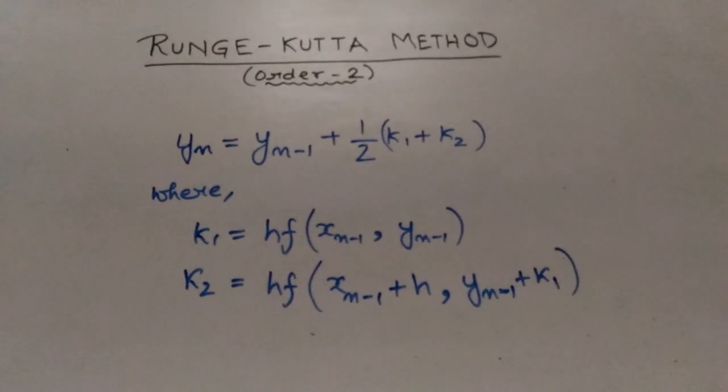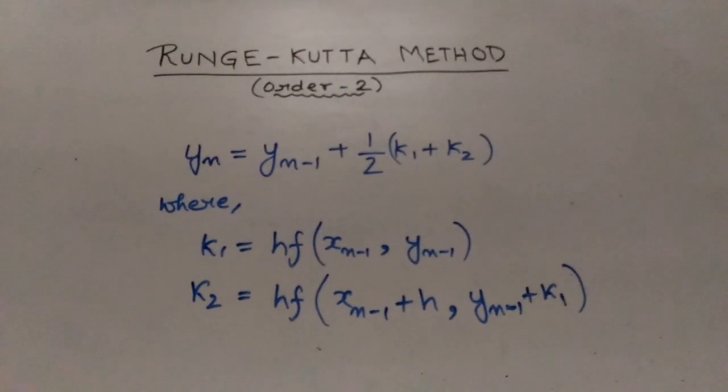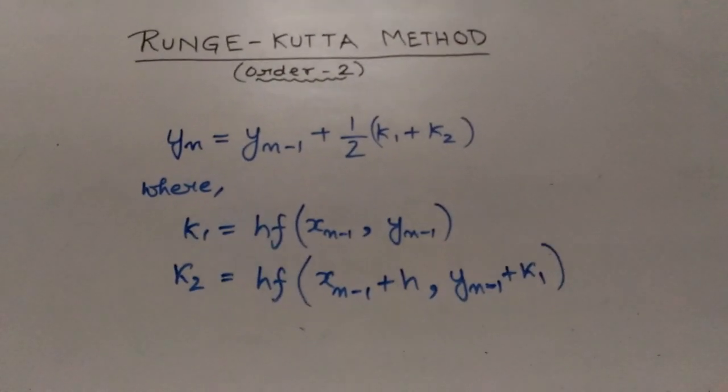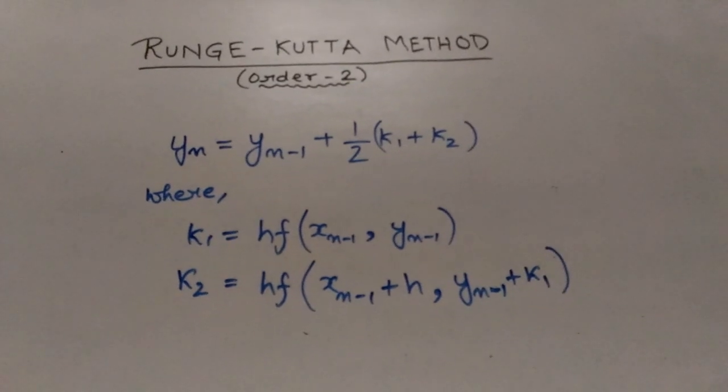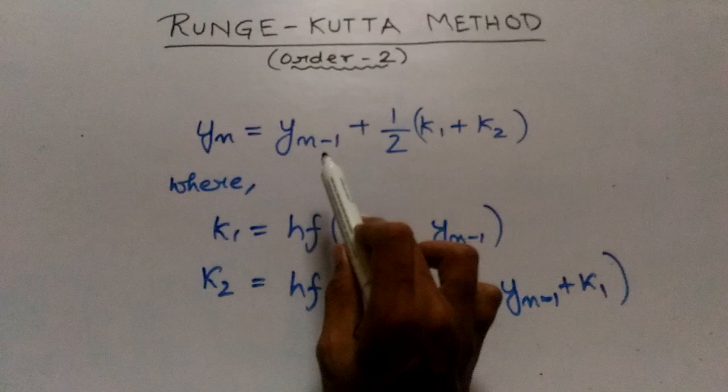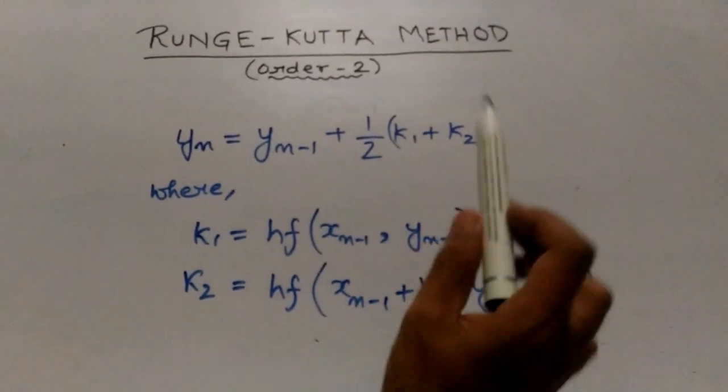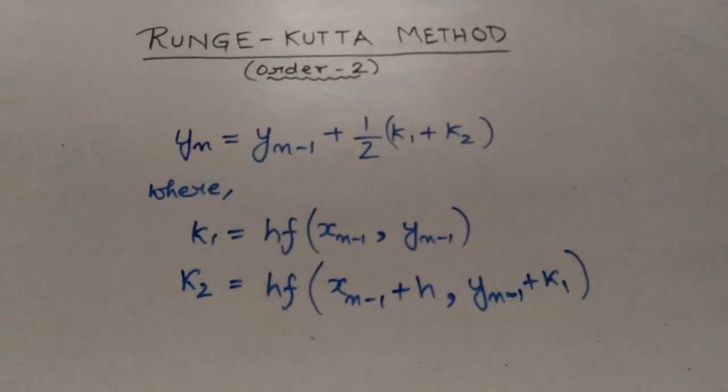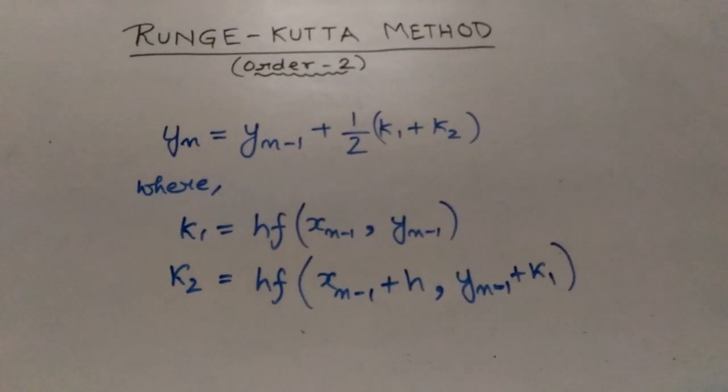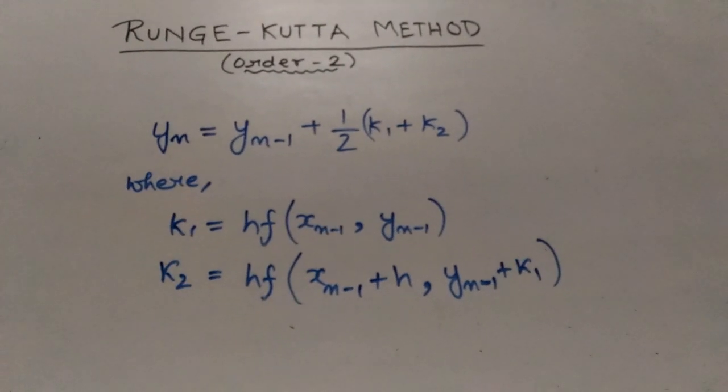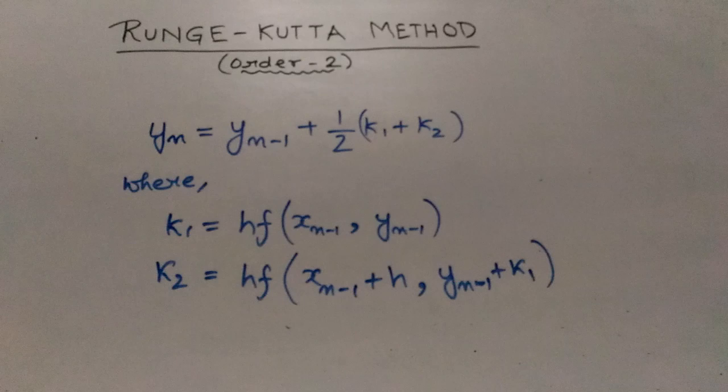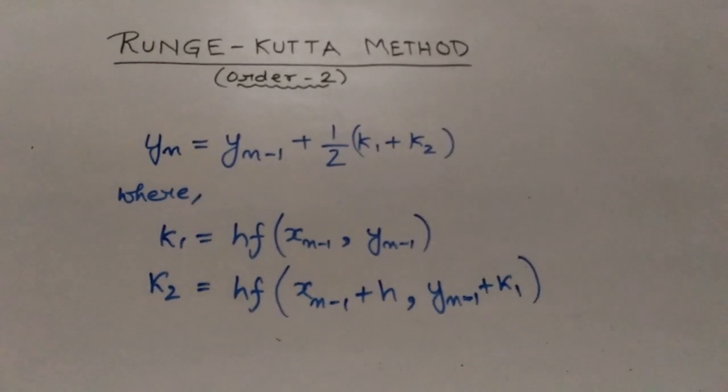In this video I will discuss the order 2 RK method, and in the next video I will discuss the order 4 RK method. Now for order 2 RK method, the basic working formula is YN equals YN minus 1 plus half K1 plus K2, where K1 is HF of XN minus 1 comma YN minus 1, and K2 is H into F of XN minus 1 plus H and YN minus 1 plus K1.